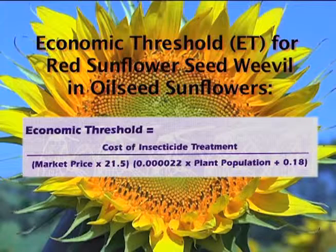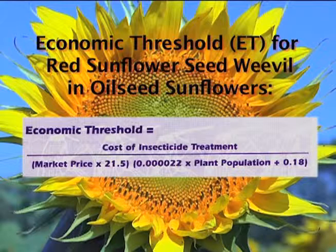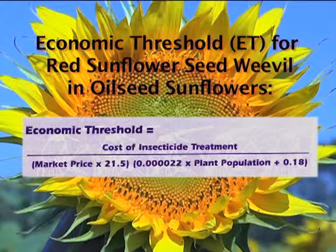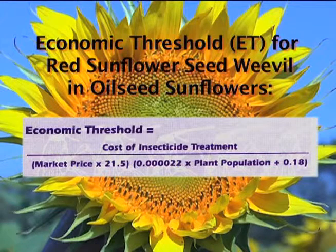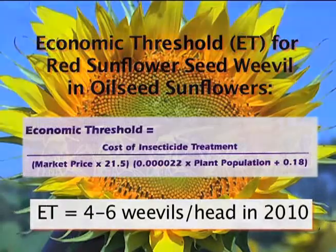To decide whether to use insecticide to control the red sunflower seed weevil, it's necessary to determine the economic threshold for this year. The economic threshold is based on the cost of insecticide per acre, the market price of sunflower in dollars per pound, and the plant population per acre. Using a cost of insecticide between eight and ten dollars per acre, the economic threshold is near four to six weevils per head this year.